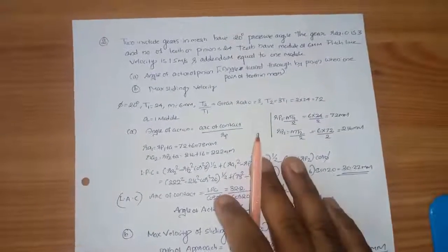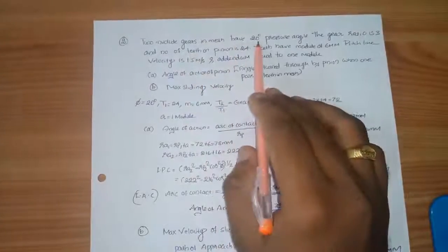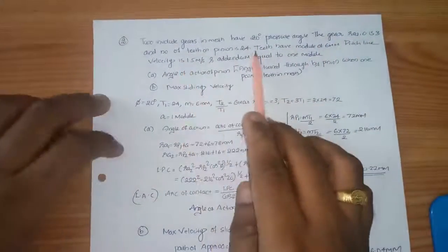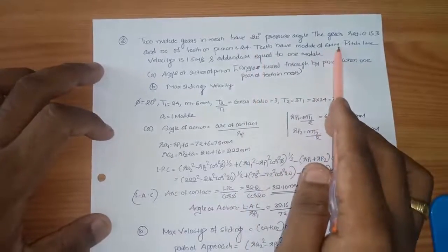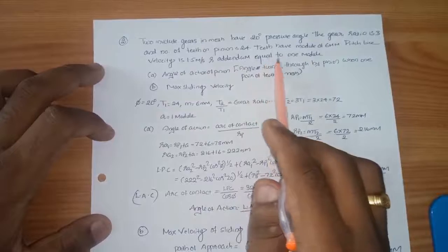Good morning to all. Next gear is an important problem. The problem is envelope gear mesh with 20 degree pressure angle, gear ratio 3, number of teeth on pinion 24, teeth half 6 mm module, pitch line velocity 1.5 meters per second, addendum equal to 1 module.